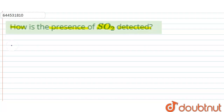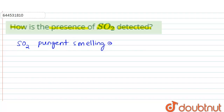We know sulfur dioxide is a pungent-smelling gas. The presence of sulfur dioxide can be detected by two tests generally. The first one is the test of sulfur dioxide with potassium permanganate.